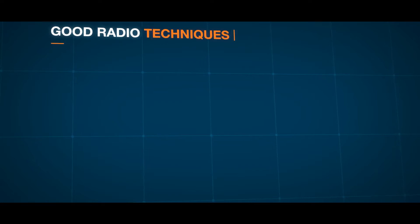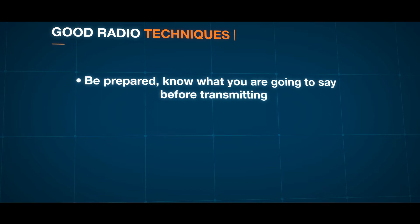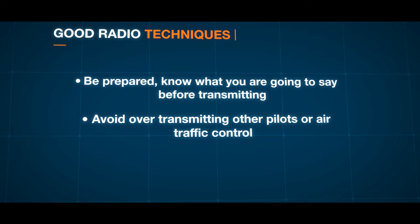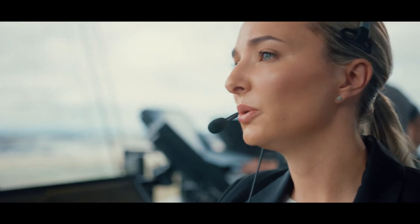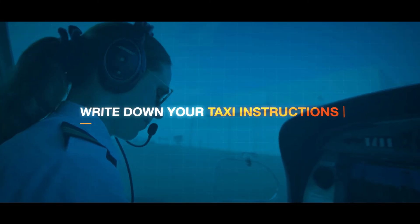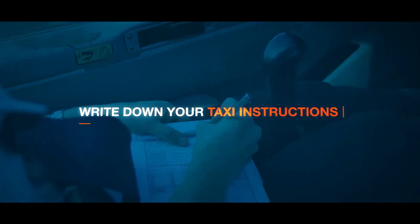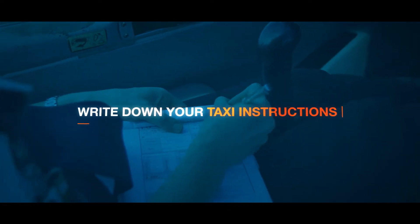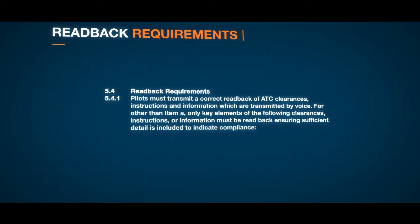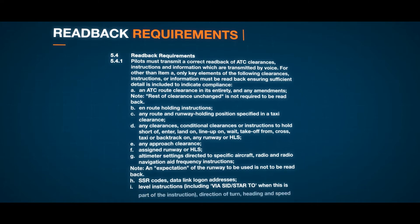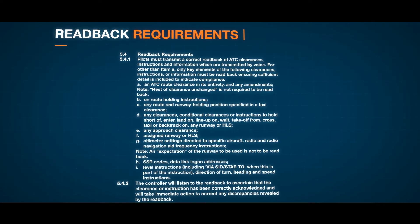Good radio techniques also assist in minimising errors. Be prepared — know what you are going to say before transmitting. Avoid over-transmitting other pilots or air traffic control, and always check and cross-check you are transmitting on the correct frequency. If you are not familiar with the aerodrome, request detailed taxi instructions from air traffic control — they are there to assist you. Write down your taxi instructions, as this can help you remember the clearance and provide the required read back. Read back required elements of the clearance as published in the Aeronautical Information Publication, and always seek clarification from air traffic control if in doubt.